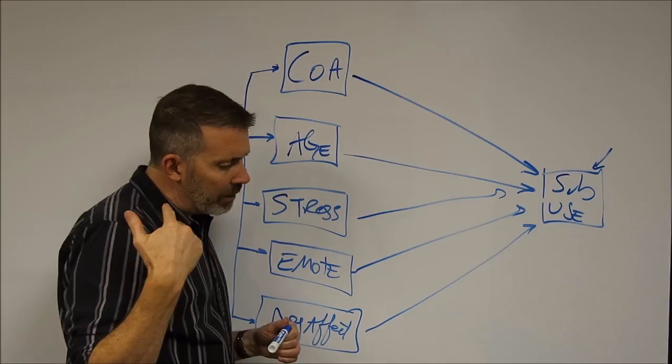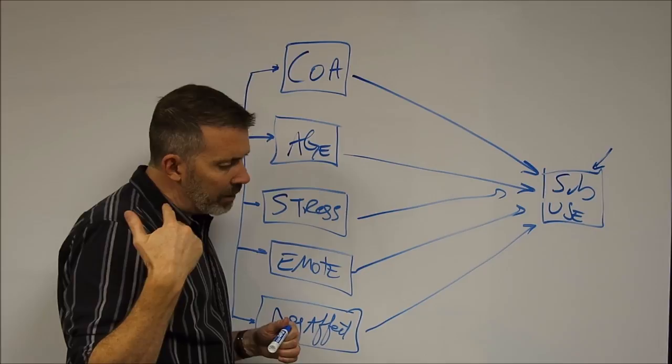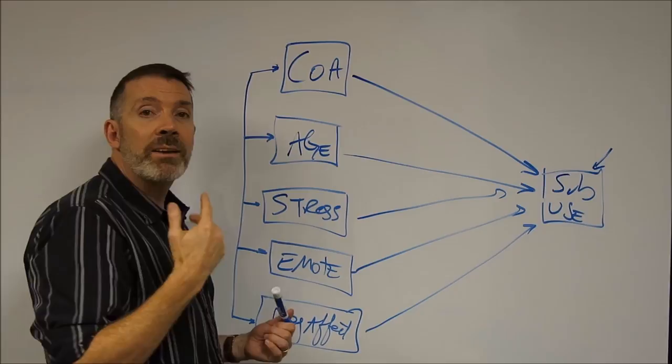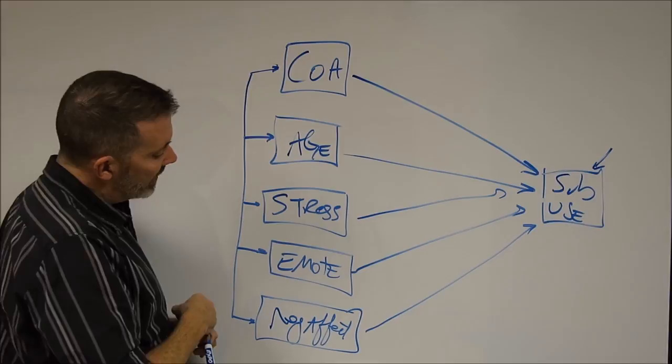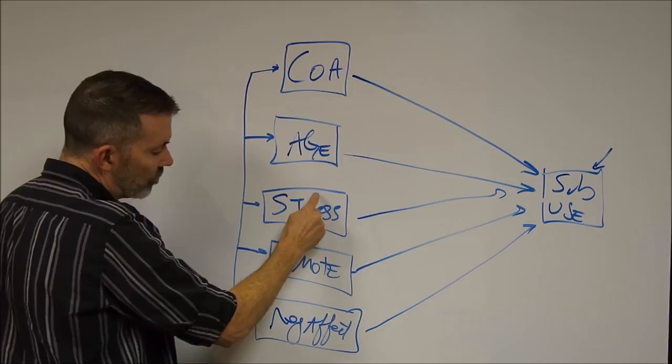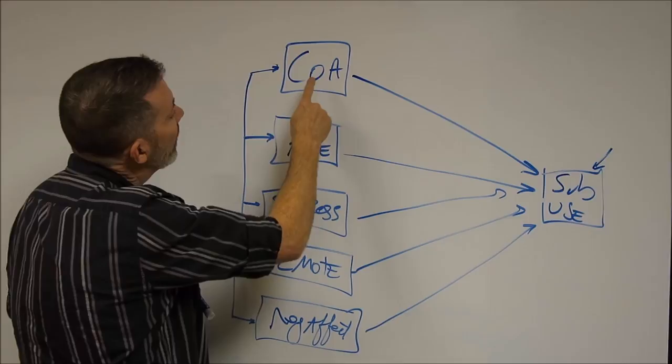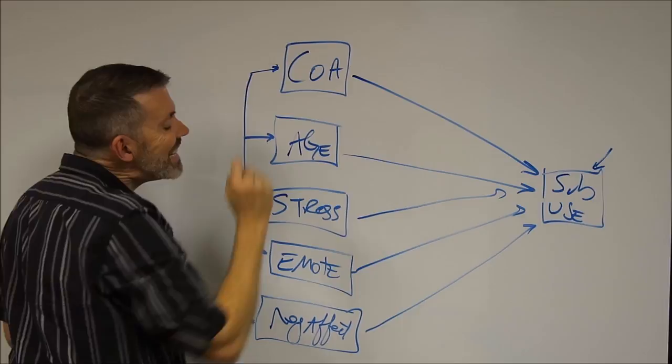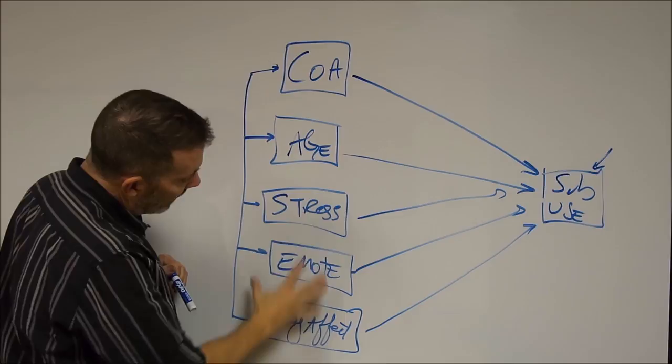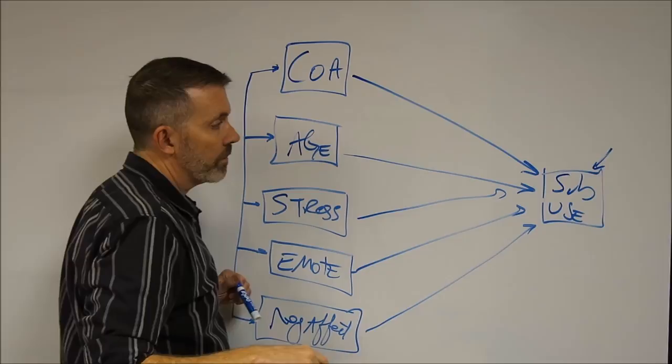Putting on my developmental psychopathologist hat — is this the model that I'm most interested in? For my theoretical model, it's actually not. What this model is asking is: what is the relation of negative affect and substance use controlling for COA, age, stress, and emotionality? What I'm really interested in is whether the effect of COA on substance use is mediated by stress, emotionality, and negative affect. That is, do stress, emotion, and negative affect mediate the effect of COA on substance use? How would we restructure the model to allow us to test that?